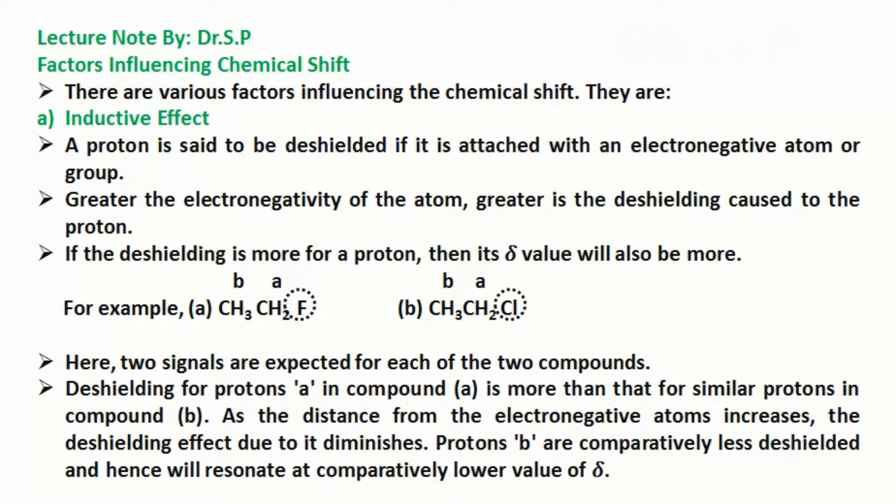Factors influencing chemical shift: There are various factors influencing the chemical shift. They are: a) Inductive Effect. A proton is said to be deshielded if it is attached with an electronegative atom or group. Greater the electronegativity of the atom, greater is the deshielding caused to the proton. If the deshielding is more for a proton, then its δ value will also be more.